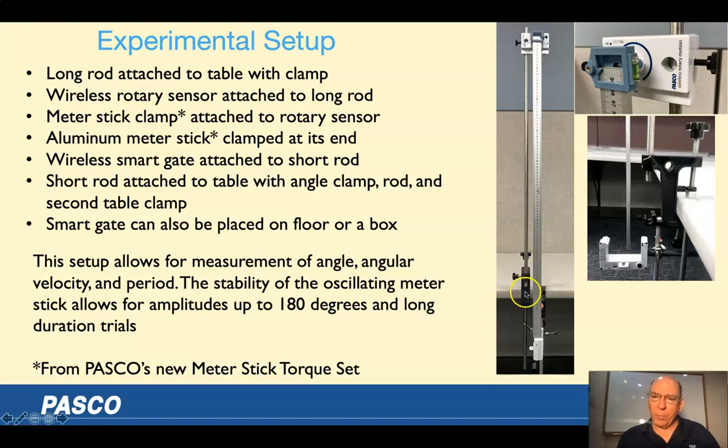So I have a table clamp with a long rod and a rotary motion sensor connected to that. And then on the rotary motion sensor is a clamp that allows me to clamp this meter stick, and I'm using the new aluminum meter stick we have here at Pasco, and these are part of the system we call the meter stick torque set. And then down here at the bottom, I have another table clamp and a rod and a smart gate, just a photo gate to measure the period. You can also just have it sitting on a box or lower things to the floor. But this setup lets me easily have a pendulum with an amplitude of up to 180 degrees. It's pretty safe, it's not a big heavy thing that could hit somebody, and it would result in a lot of interesting things.